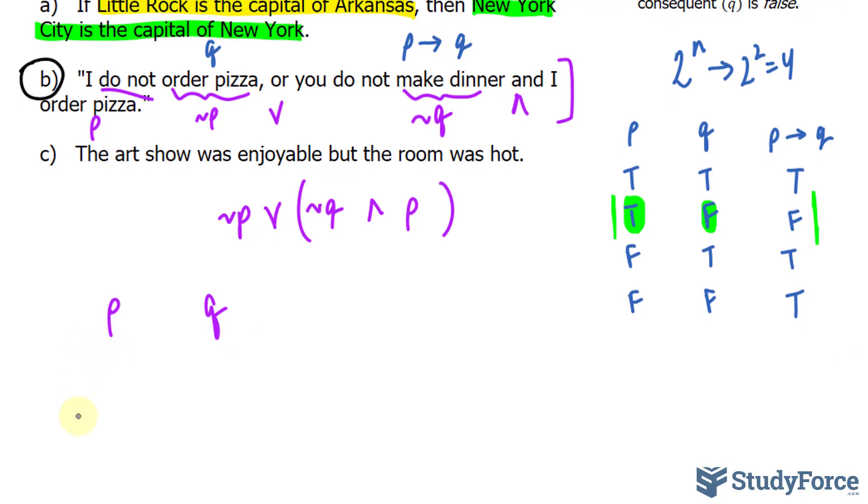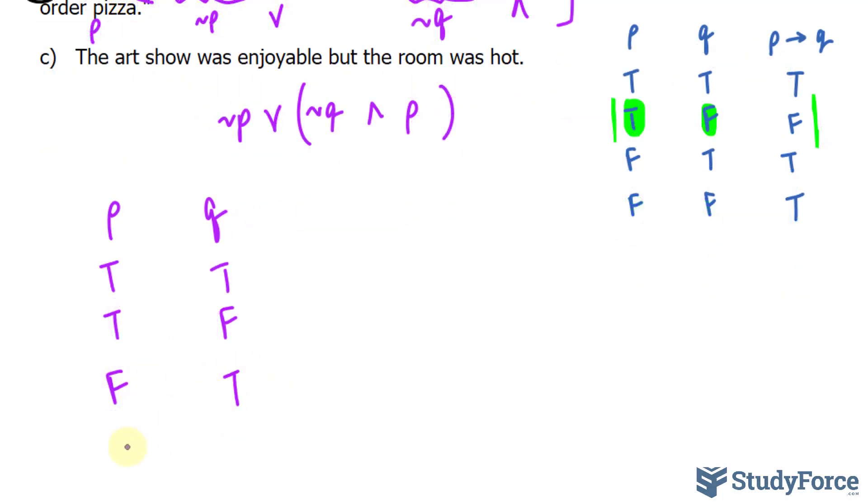And my first of four combinations is true, true. The second will be true, false. False, true. And finally, false, false.